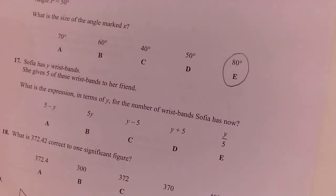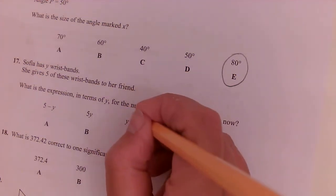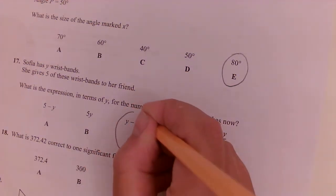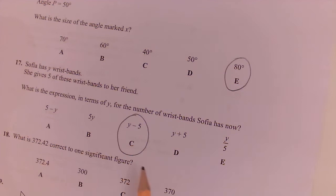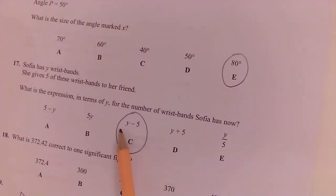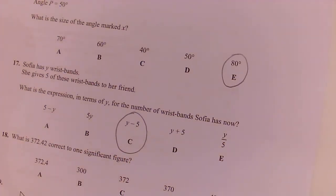Question 17. Sophia has a number of wristbands. We're calling that Y. She gives five of them to her mate. Write down an expression in terms of Y for the number of wristbands Sophia now has. Well, she had Y and she's given away five. So that is Y take five. So if she started off with 20 and she gave away five, she would be left with 15, which is 20 take away five. So Y take away five.